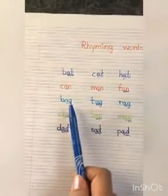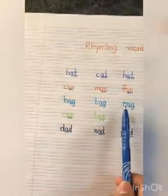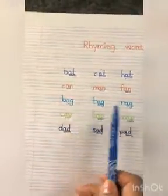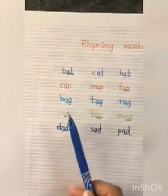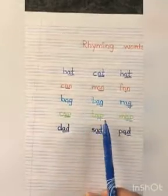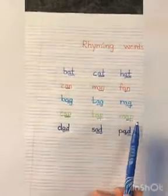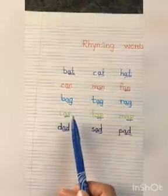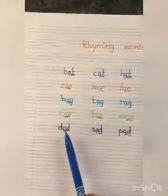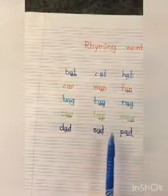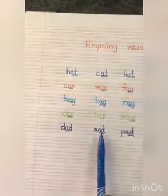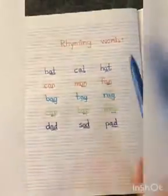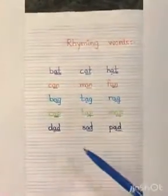Bag, tag, and rag — here also you can see 'ag' is the same. Cap, tap, and map — you can see here that 'ap' is the same. Similarly, dad, sad, and pad — here also the last two letters 'ad' are the same. So these are called rhyming words.